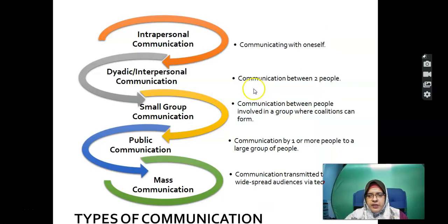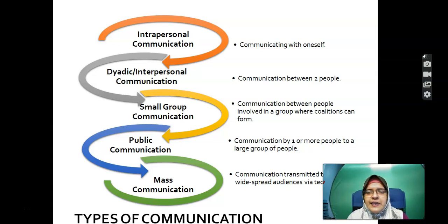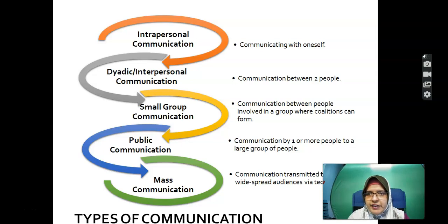Types of communication: there are five. Intrapersonal communication is when you talk to yourself — for example, practising for a presentation by speaking to a mirror or recording yourself. In fact, this recording is also communicating with oneself, though imagining talking to the students. Dyadic or interpersonal communication is communication between two people.